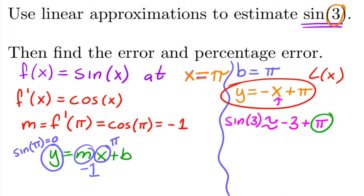Well, this one we don't even need a calculator for. π, let's just say it's 3.1416, let's just round it to four decimal places. And so this would simply equal to negative 3 plus that, is just 0.1416. So that's our approximation.